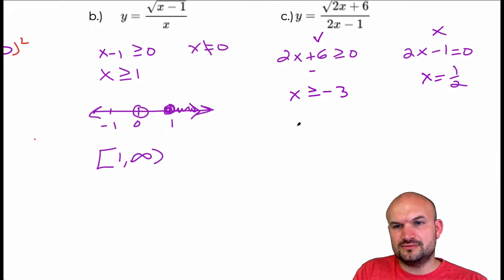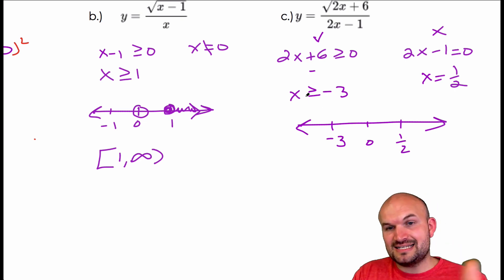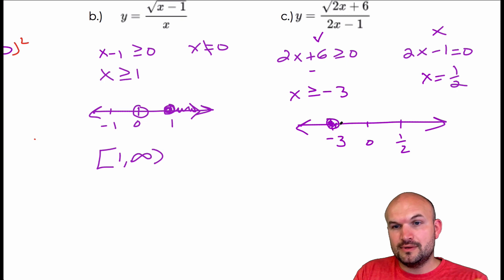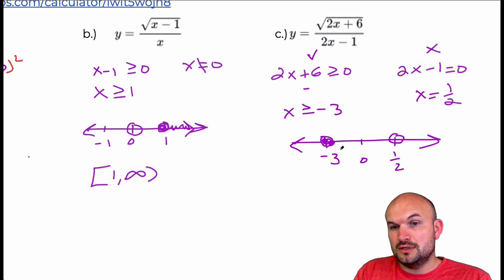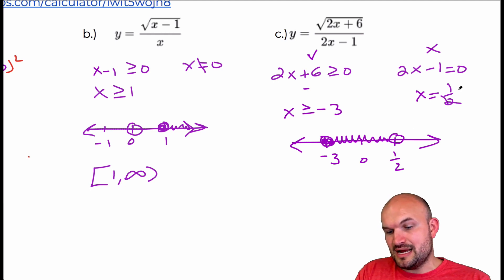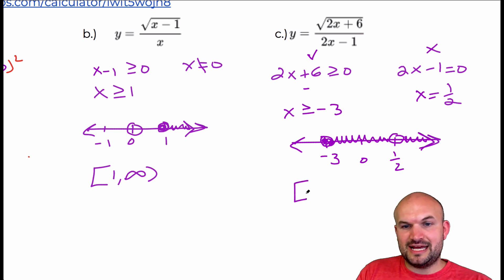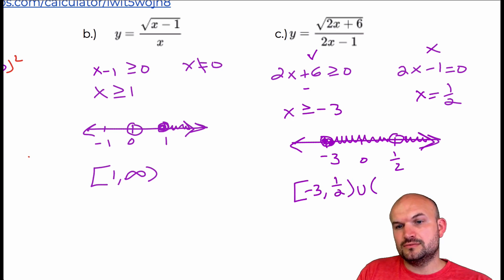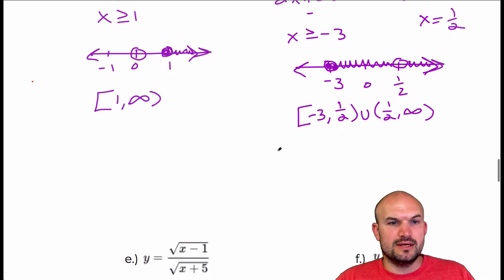It's helpful to draw the number line here. I have negative three, zero, and one half marked. Since x must be greater than or equal to negative three, all values from negative three onward are in the domain. But when x equals one half, that's not in the domain — the denominator equals zero there — so at one half I have a hole. My domain skips over one half, giving: negative three included to one half not included, union, one half to infinity. So the domain is [-3, 1/2) ∪ (1/2, ∞).